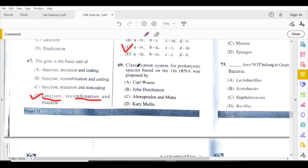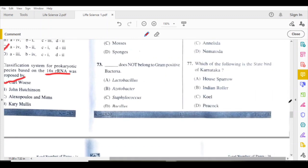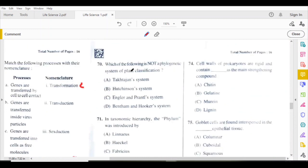Classification system for prokaryotic species based on 16S rRNA was proposed by Carl Woese. Which of the following is not a phylogenetic system of plant classification? Bentham and Hooker system of classification is based on artificial system.